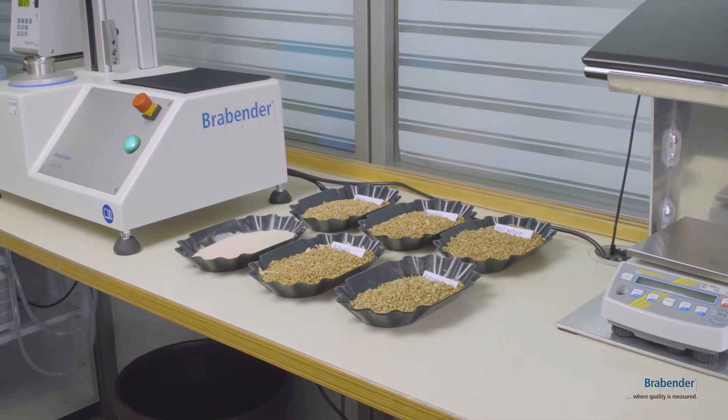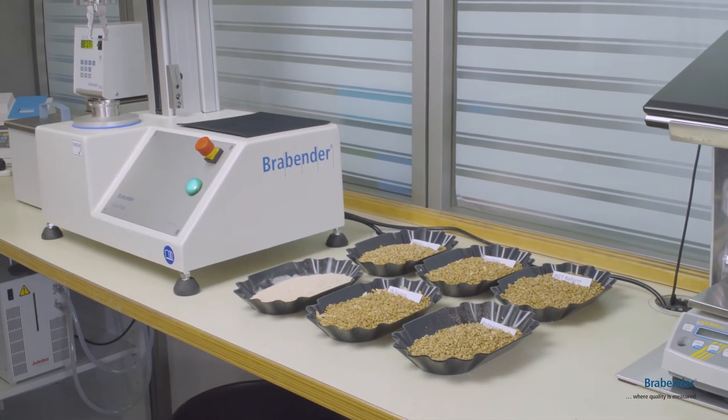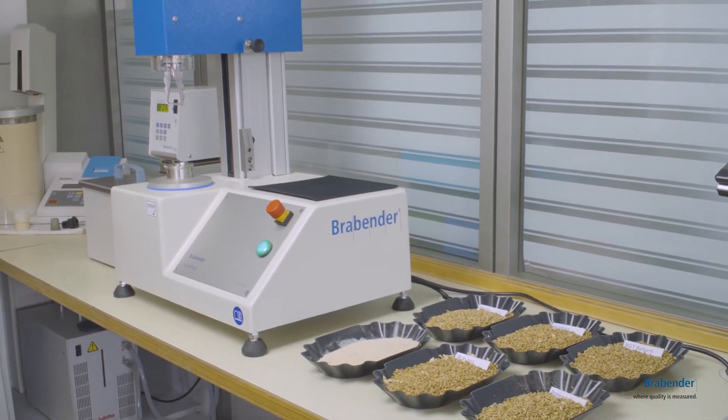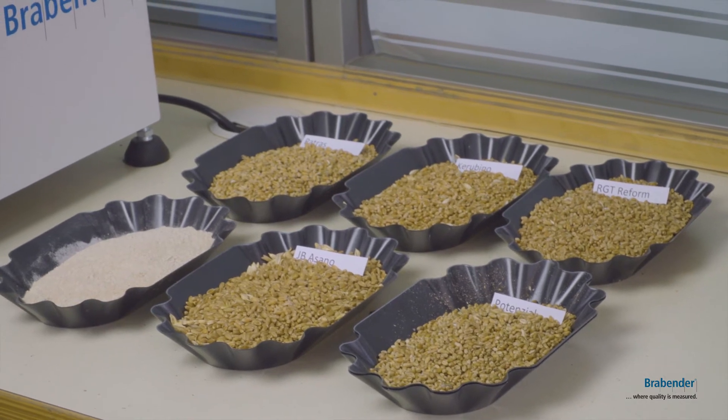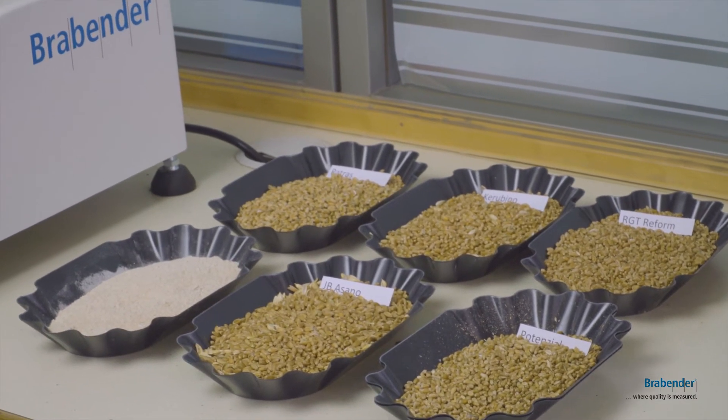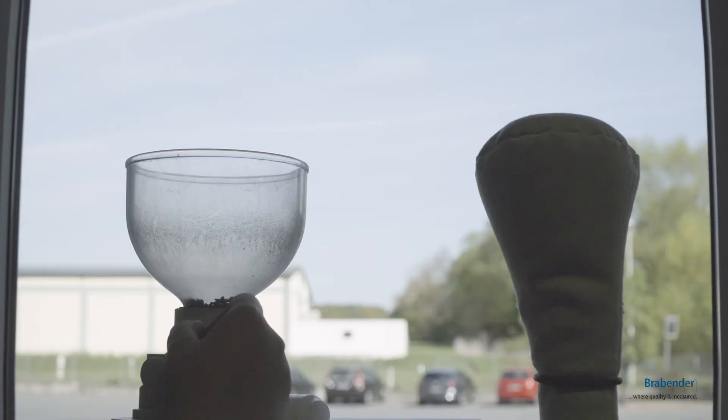The Brabender Gluto Peak has been in use in the Wiesnet Mill since the summer of 2016. It has been placed in the grain-receiving area in order to directly evaluate all delivered grains during the year, and especially during the peak season.